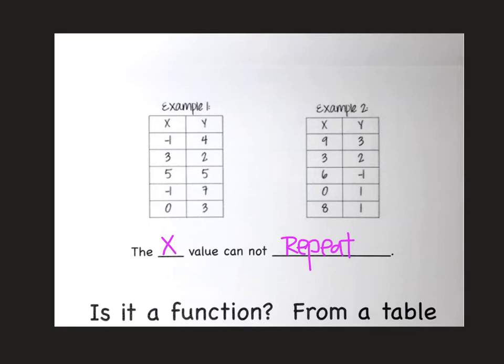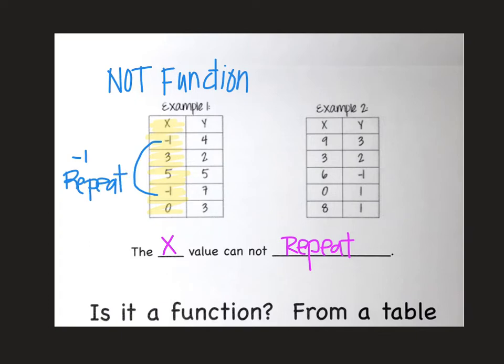All I need to do is I need to take my X column. I'm going to look at it. If any of those numbers repeat, then it's not a function. So when I go down the list, I have negative 1, 3, 5, negative 1. Okay, that already made me stop. I don't need to look at anything else. This one would be not a function because the X value of negative 1 repeated. Negative 1 had a repeat. So that means not a function.